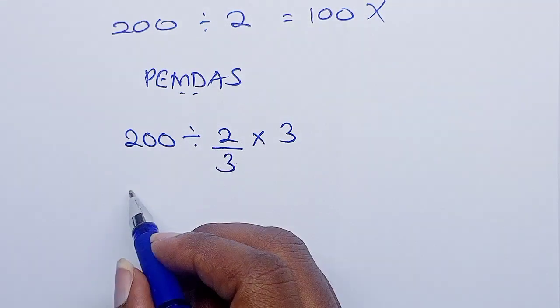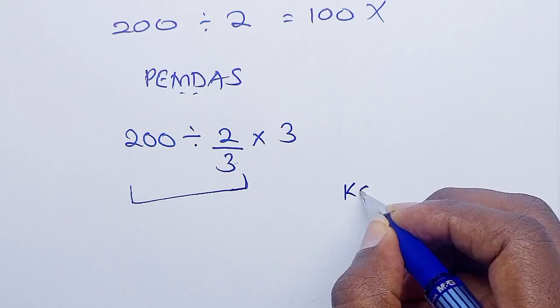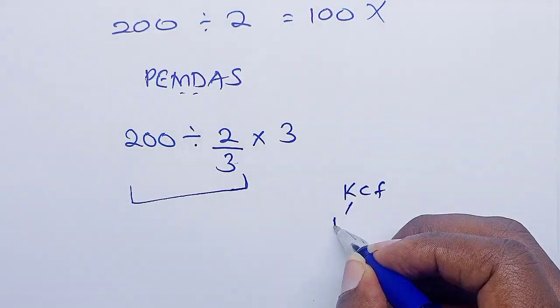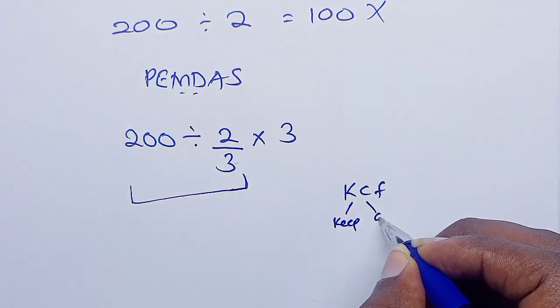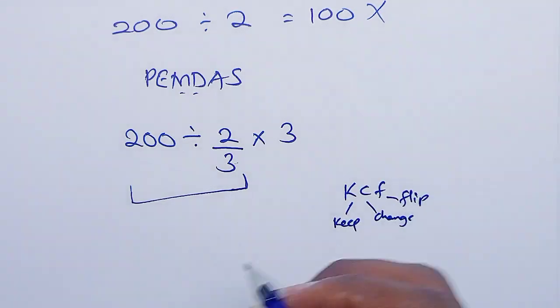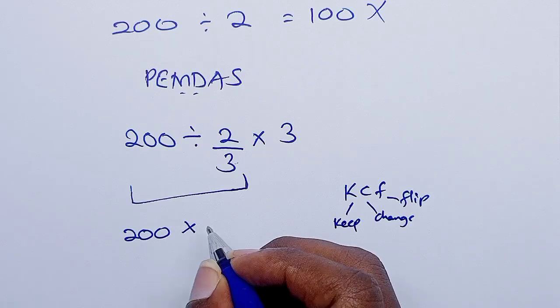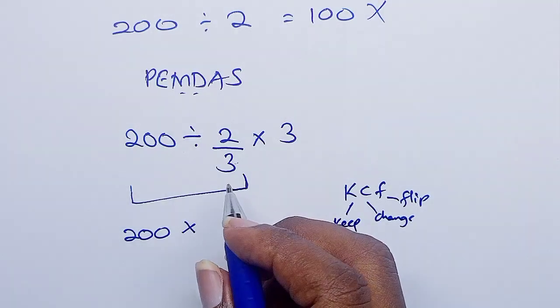Now using the KCF rule, where you keep the first value, change the sign, and then flip the last value. So we shall have 200, then change the sign to multiplication, and then flip 2 over 3 becomes 3 over 2, times 3.